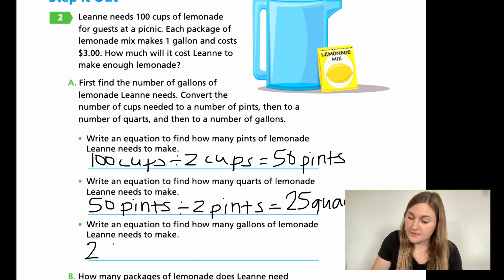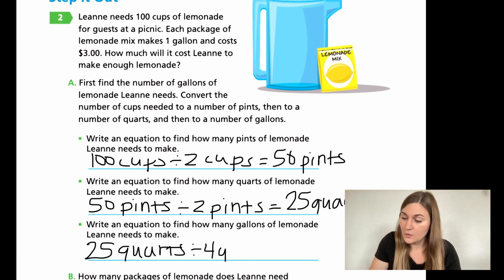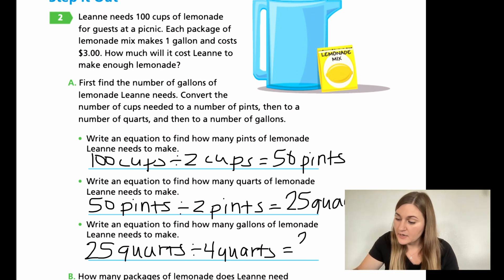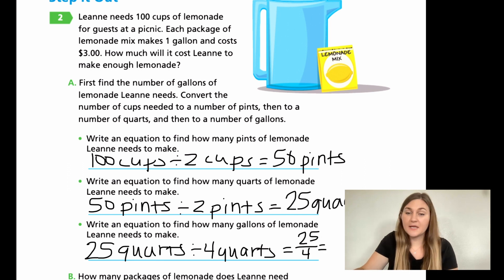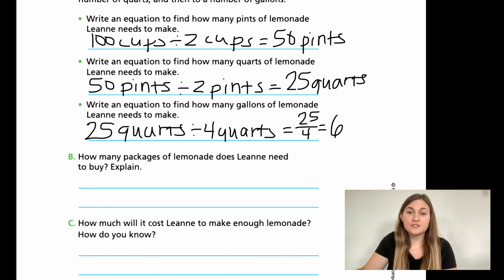Now starting with 25 quarts, I know that from quarts to gallons it's four — four quarts for every one gallon. So I divide by four quarts to move into gallons. Twenty-five divided by four — so close to being even but not quite. I'll write it as a fraction: 25 over 4, and make it into a mixed number. Four goes into 25 six times to get 24, with one remainder, so that's six and one fourth gallons.